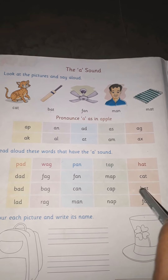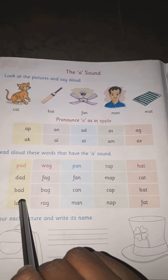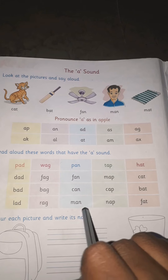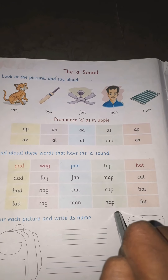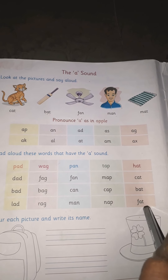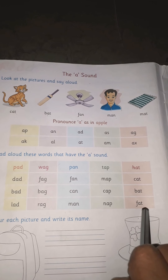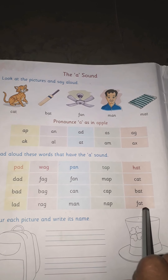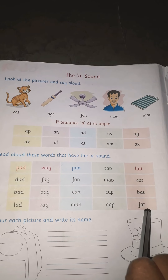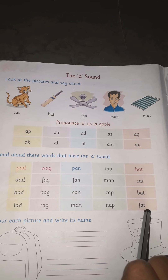Cat, bat, lad, rag, man, nap, fat. Read loudly. You have to practice the spellings in a four line book.